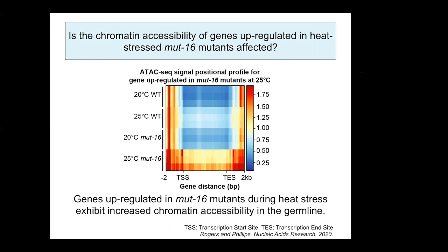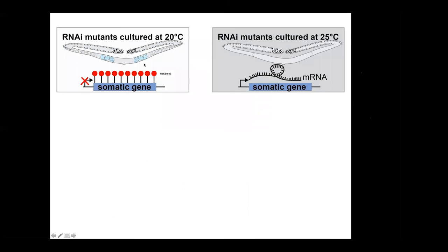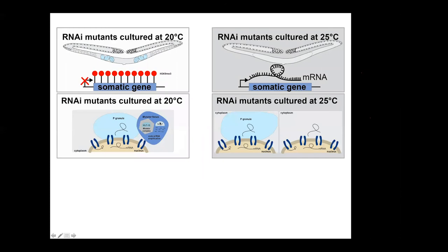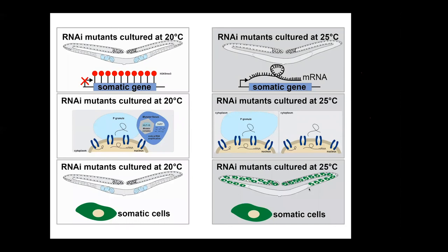To quickly recap: RNAi mutants cultured at permissive temperature have repression of somatic genes, likely through deposition of H3K9-methyl-3. When these RNAi mutants are cultured at non-permissive temperature, they are susceptible to changes in chromatin accessibility due to heat stress, resulting in ectopic expression of somatic genes within the germline. Additionally, RNAi mutants at non-permissive temperature have disrupted P granule integrity — either large P granule aggregates or complete absence of P granules. The combination of these effects ultimately results in loss of germ cell identity.